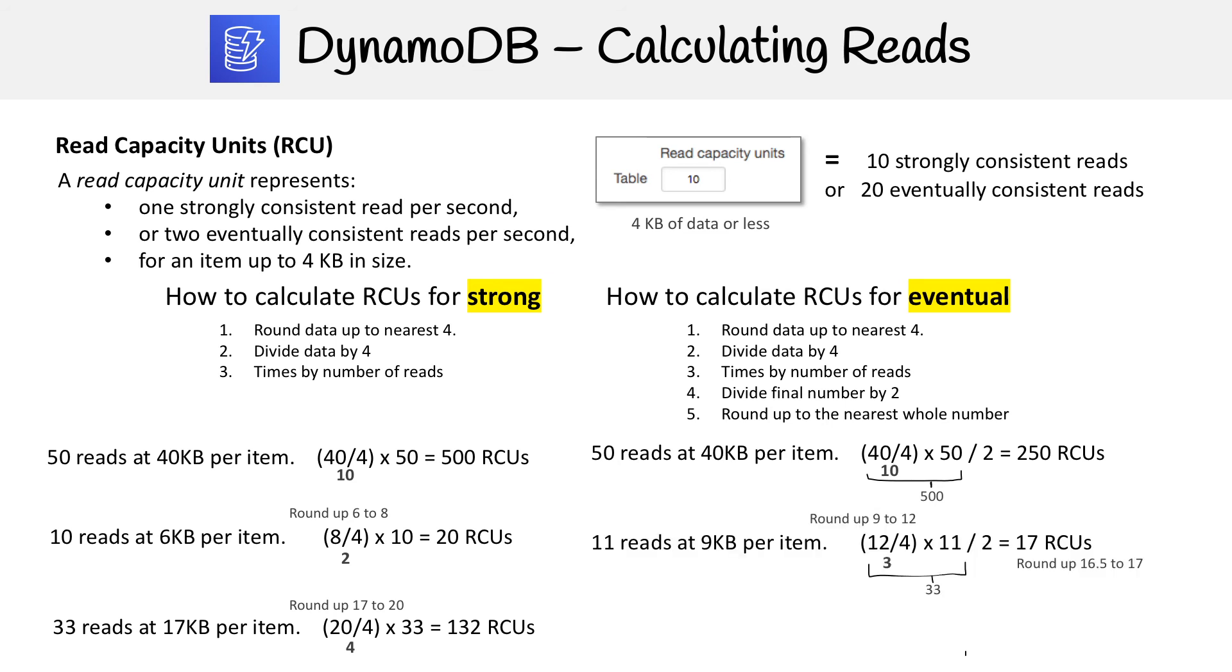The next example, we have 11 reads at nine kilobytes per item. So we're going to round up nine to 12, which is the nearest four, and then we're going to divide that by four, which gives us three. Three times 11, that's the amount of reads. So that's 33. Then we divide by two, which gives us 16.5. And then we'll have to round that up to the whole number. So that's 17. So we're at 17 RCUs.